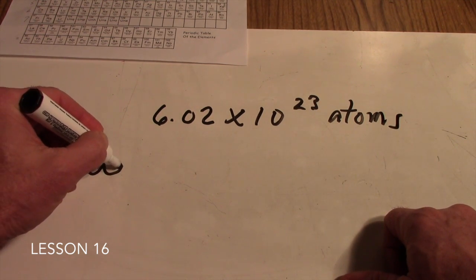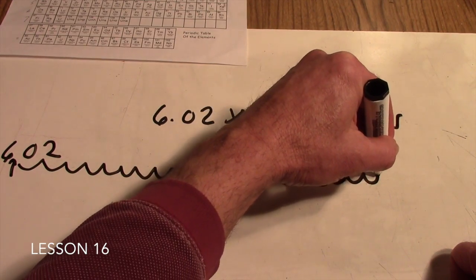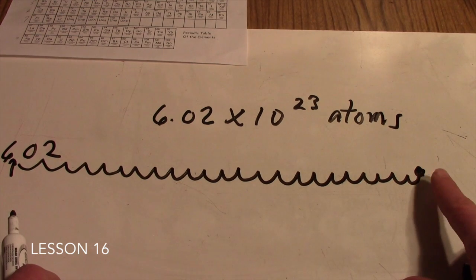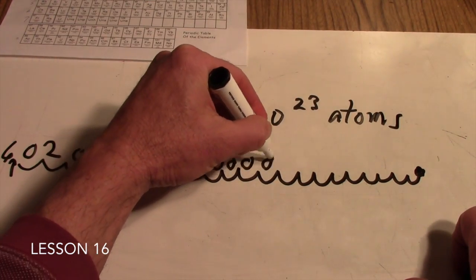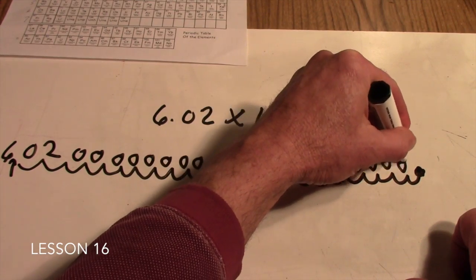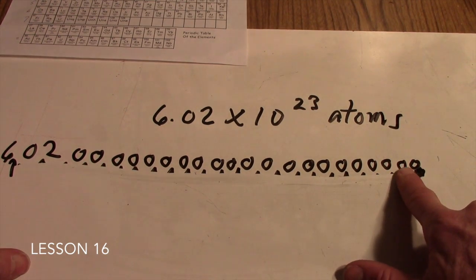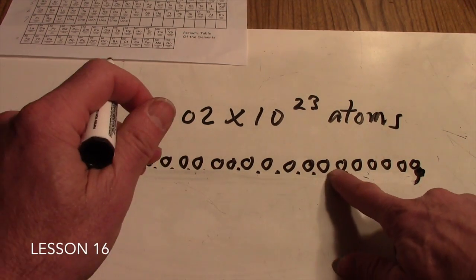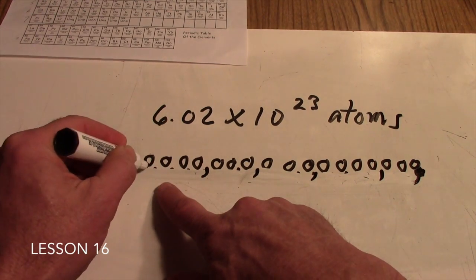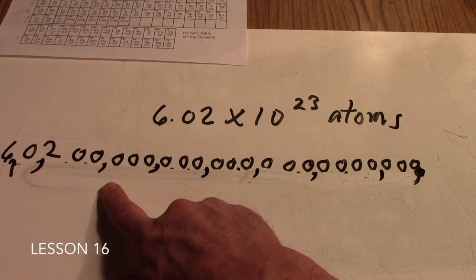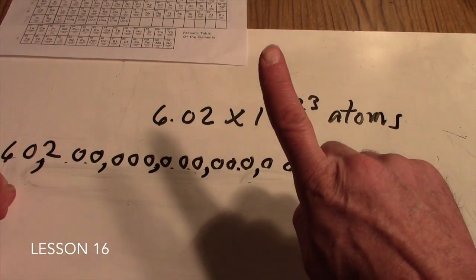So we count out 23 zeros to the right and place our decimal point there. Then we put commas in so it looks more like a number we can read — there's thousands, millions, billions, trillions, quadrillions, and so on. But this is Avogadro's number: there are this many atoms in one mole of any substance.